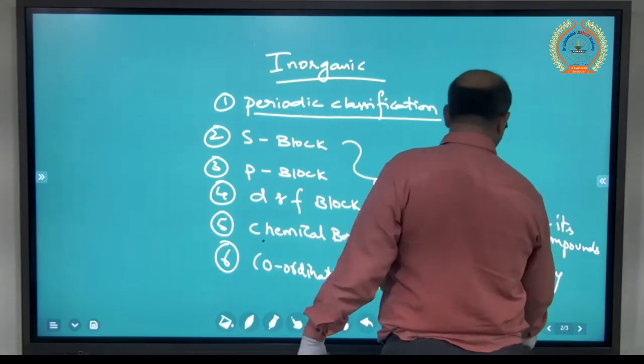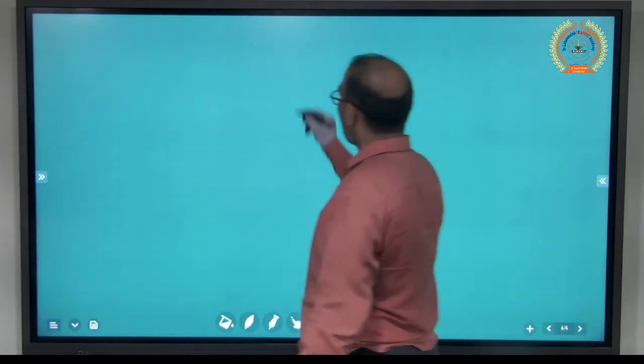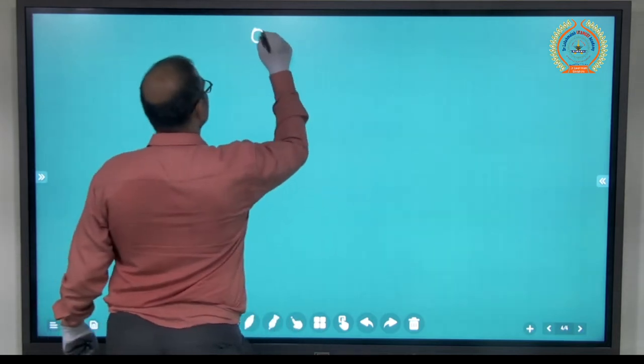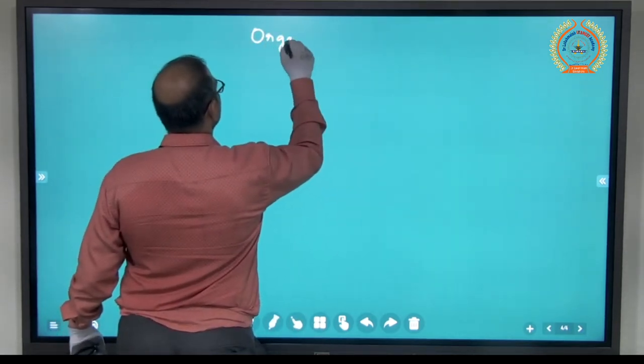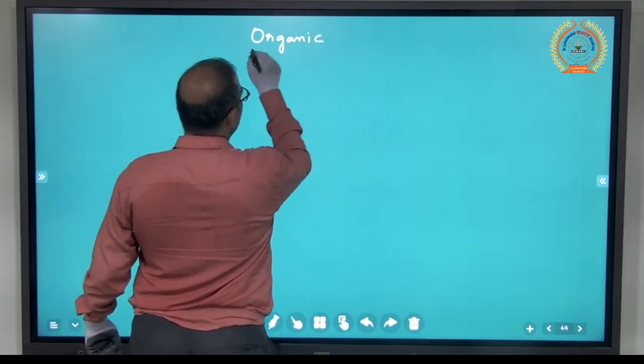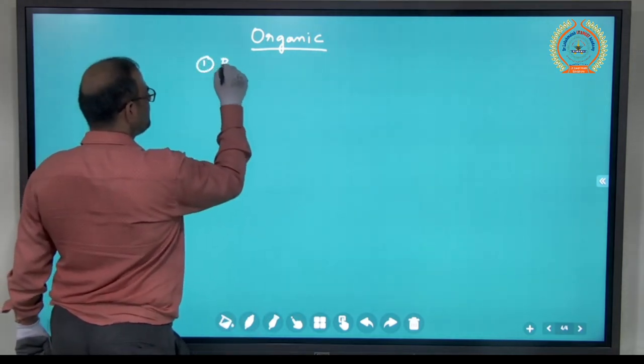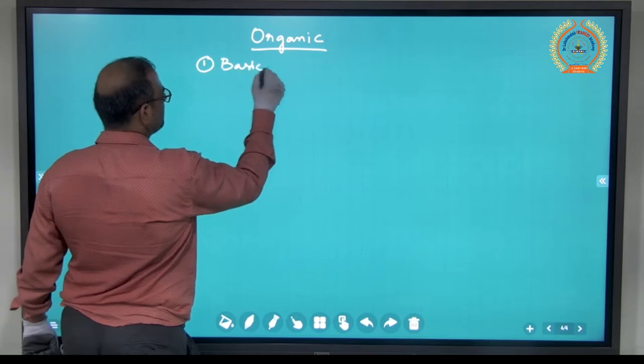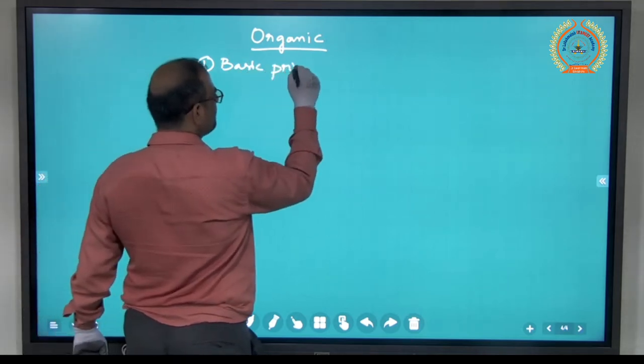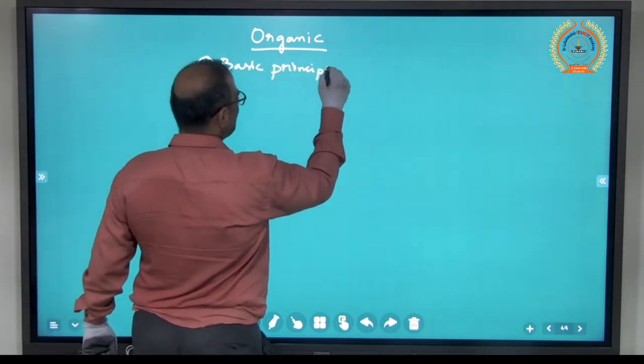We are going to talk about organic chemistry. In organic chemistry, we have first chapter, basic principles. What is the first chapter? Basic principles of organic chemistry.